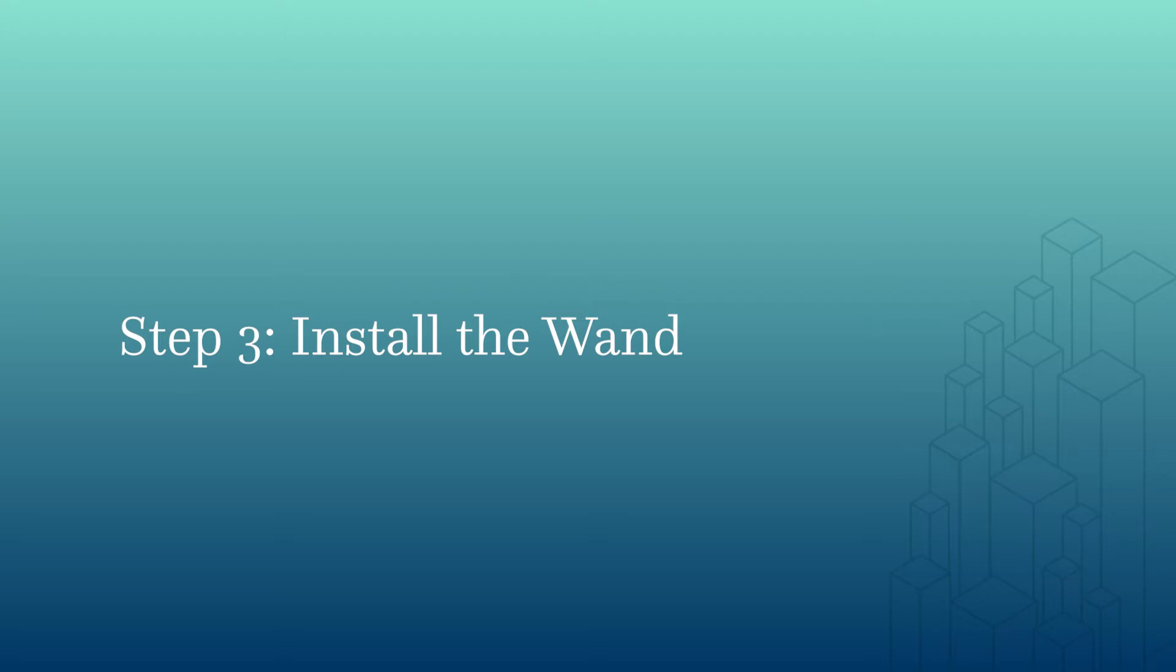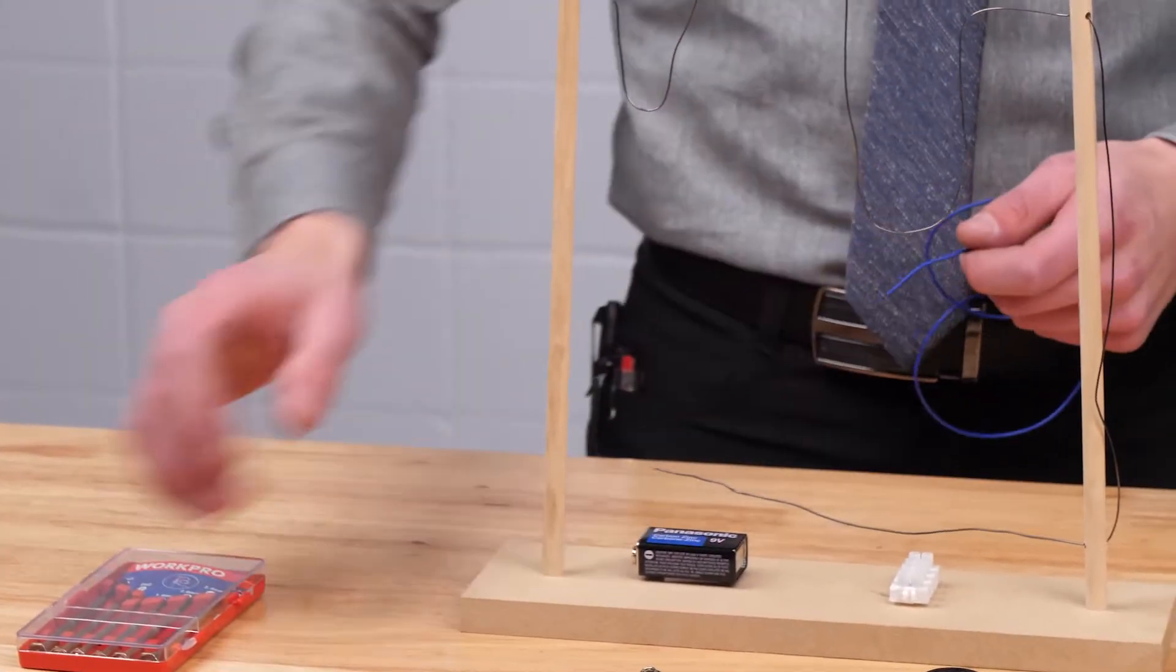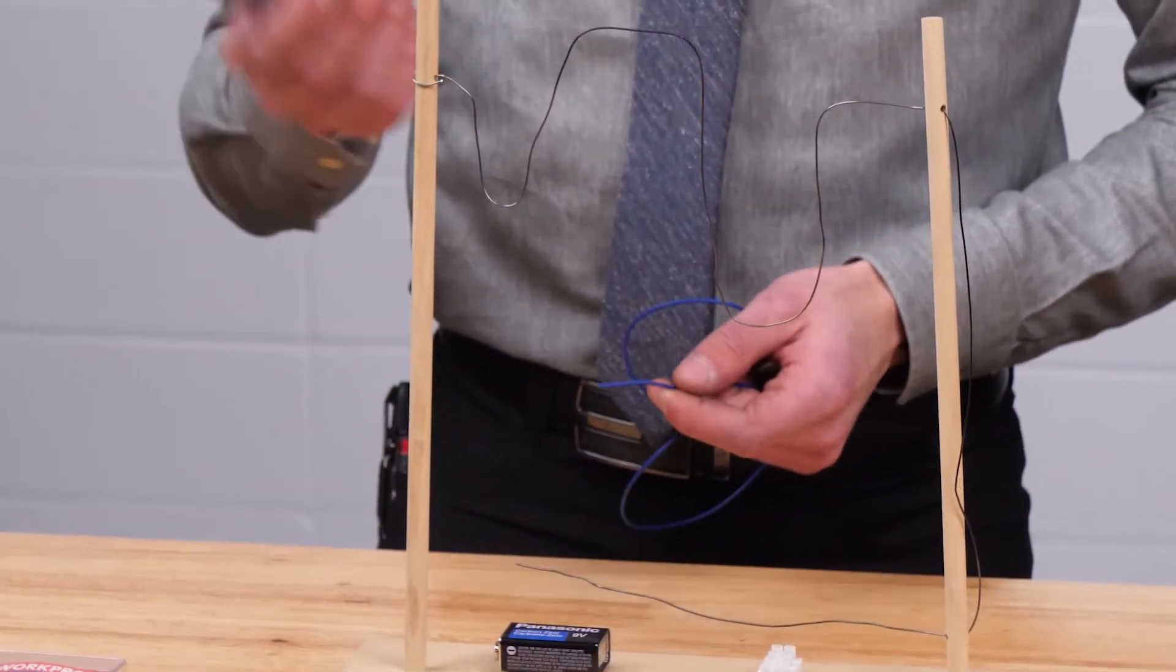Next, we're going to create our wand. To do this, we'll need our length of wire, wire strippers, and our plastic wand, which in this case is a pen.